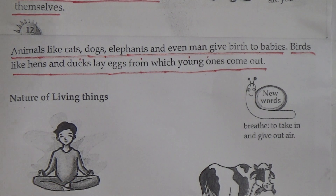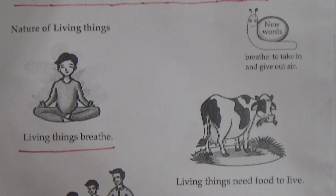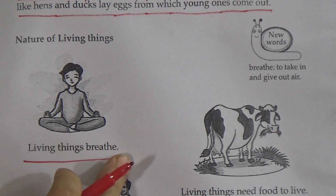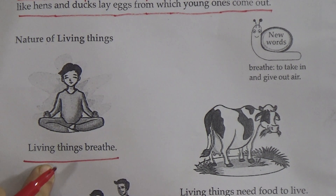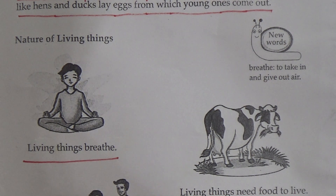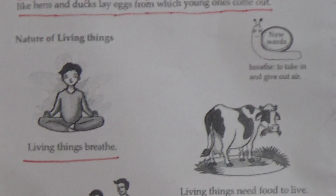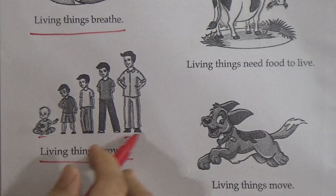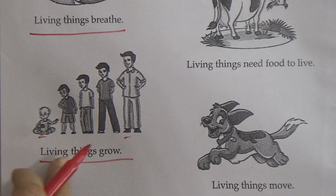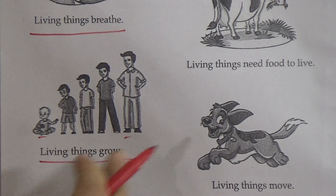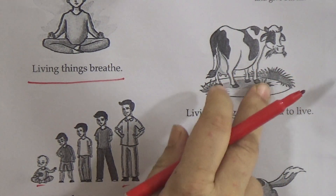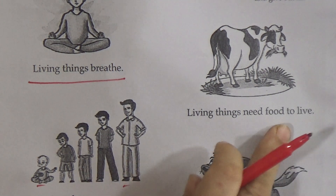Underline this line — it is very, very important. Living things breathe. Living things grow — see this figure: there is a baby and there is a man, which is an example showing that living things grow. Now see this figure — there is a cow eating grass. Living things need food to live.